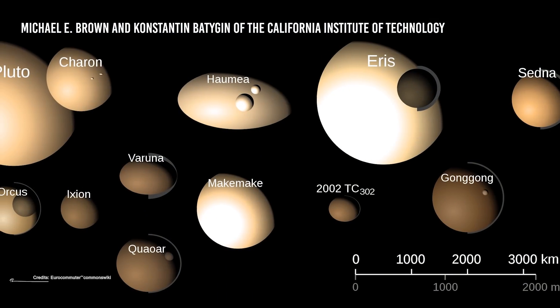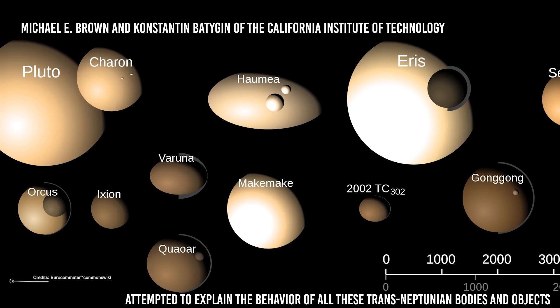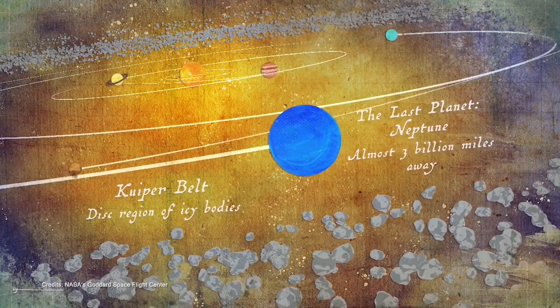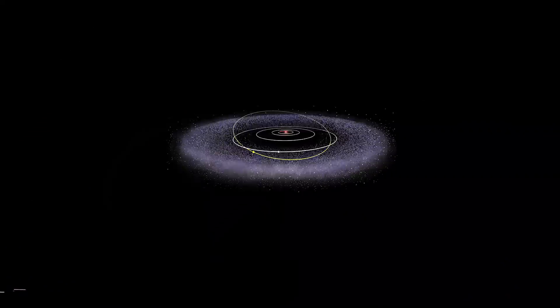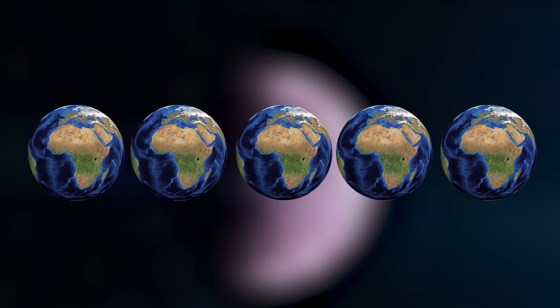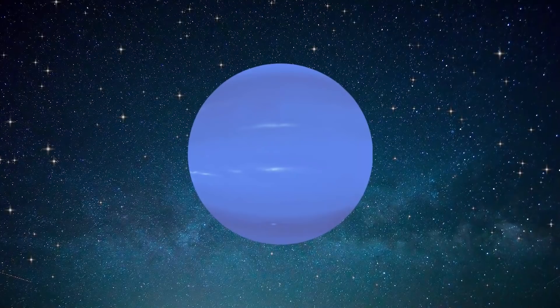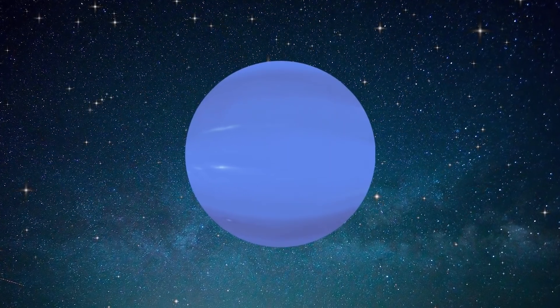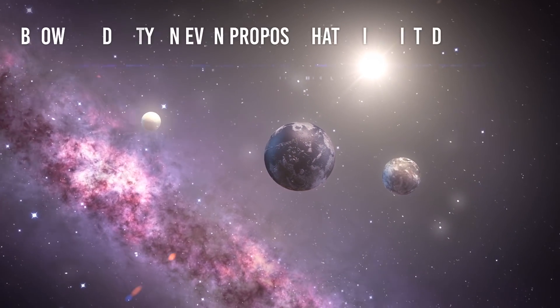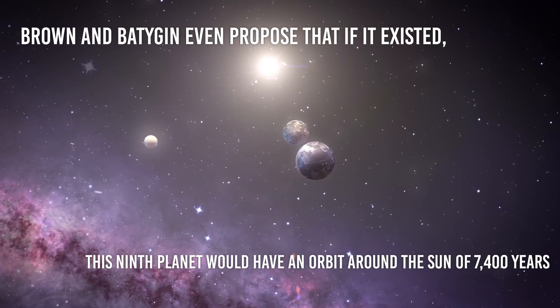Astronomers Michael E. Brown and Konstantin Batygin of the California Institute of Technology attempted to explain the behavior of all these trans-Neptunian objects and objects within the Kuiper Belt using a computer simulation in which they place bodies of different size and density in the region near these bodies. They determined that the only way to explain the orbital groupings of all these bodies is to place a planet of five Earth masses within that region, that is, a planet much larger than the Earth, called Super-Earth, but smaller than Neptune, which may be causing the orbital groupings. Everything seems to point to the fact that there is indeed the ninth planet far beyond the orbit of Neptune. Brown and Batygin even propose that, if it existed, this ninth planet would have an orbit around the Sun of 7,400 years.